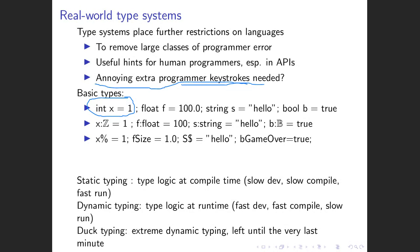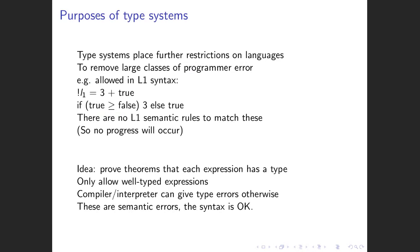In languages with really advanced type systems like Haskell you can pretty much write your whole program just inside the type system. There's actually a little AI engine which you can hot-rod to make it do other forms of AI by encoding your entire problem as a type inference problem. There are lots of different forms of typing that are passionately argued for.